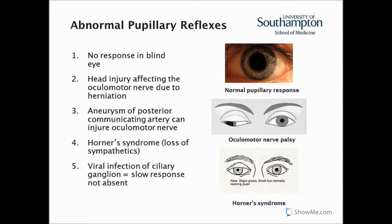Lastly is a viral infection of the ciliary ganglion. This is fairly uncommon — it's more common in women, particularly young adult women — and it produces a slow response to shining a light in the eye because of a problem with the ciliary ganglion. So the response is there, but it is slow.